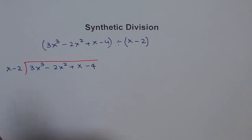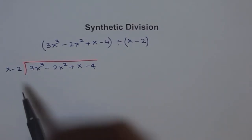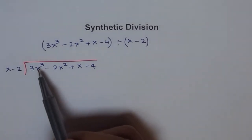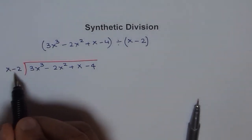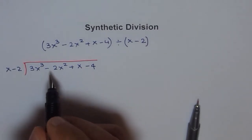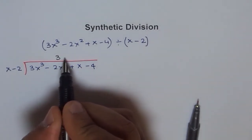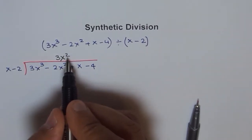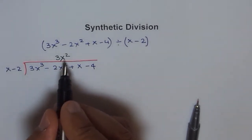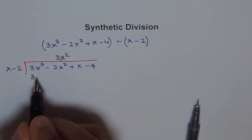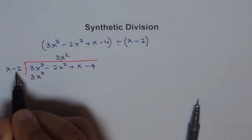We try to figure out how many times x goes into 3x³. If we multiply x by 3x², we get 3x³, so we multiply the divisor by 3x². We take the first two terms and multiply 3x² by x minus 2: 3x² times x gives 3x³, and 3x² times negative 2 gives minus 6x².